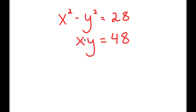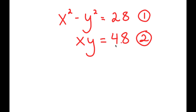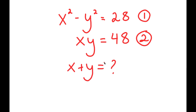In this system of equations, I have x squared minus y squared is equal to 28, and x times y equals 48. I'm given two equations. Let's say this is equation one and this is equation two. What I want to do is find the value of x plus y.